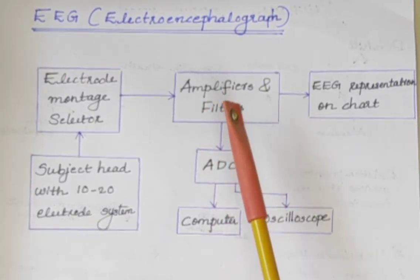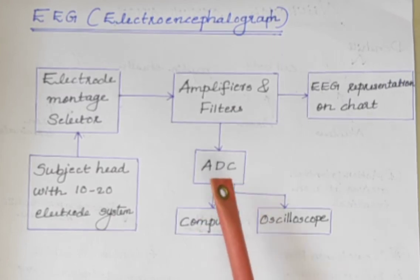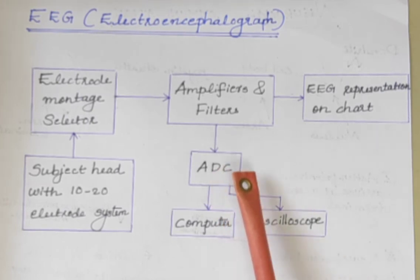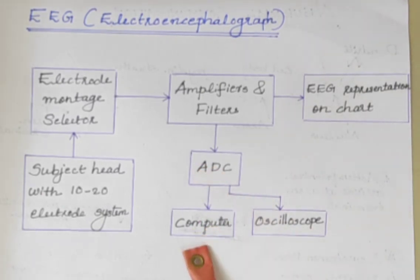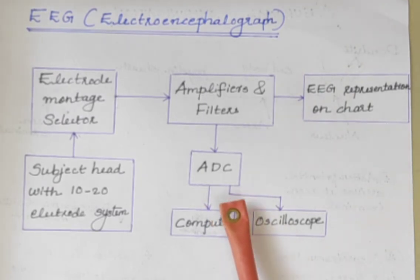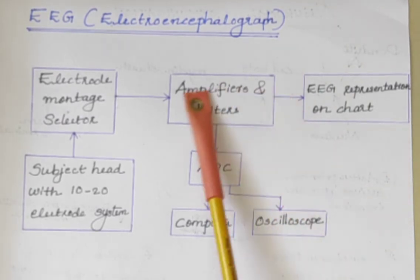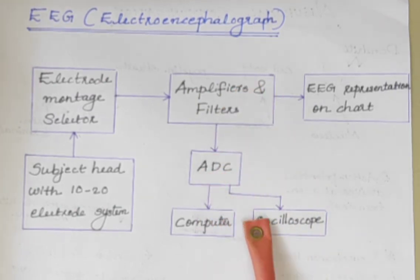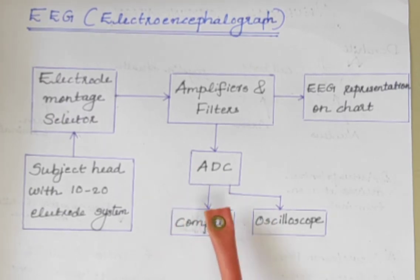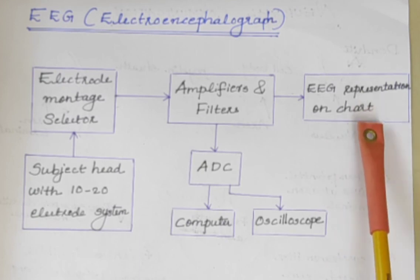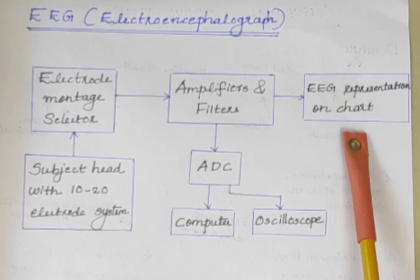After amplification, the signals are given to the ADC, analog to digital converter. For the detailed analysis of EEG waveforms, we use a computer and oscilloscope. As computers can only accept digital data, we have to convert EEG signals into digital form — ADC does this function. The computer can store the EEG waveform for further reference. Also, after amplification, we can easily represent the EEG signal using a pen chart arrangement.